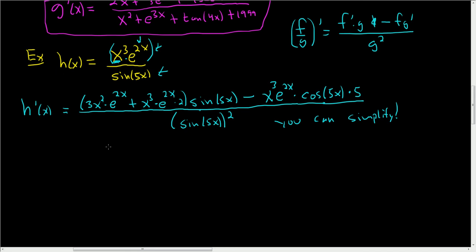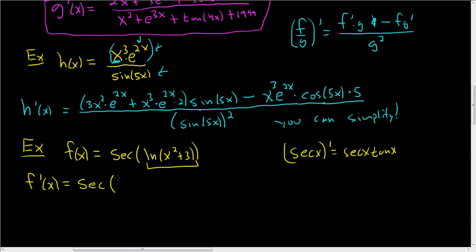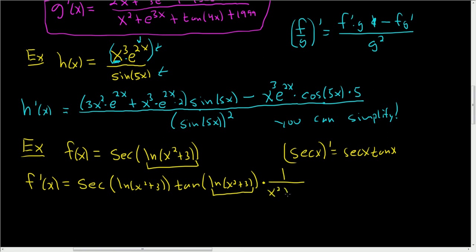Taking derivatives is the fun part — the simplification is where the grunt work comes in. Let's take another derivative. f of x equals the secant of the natural log of x squared plus 3. This is something that always causes confusion and is actually pretty tough. The derivative of secant is secant tangent. So here it's the secant of that stuff times the tangent of that stuff — you don't touch the inside. Then chain rule: multiply by the derivative of the inside. The derivative of ln x is 1 over x, so it's 1 over x squared plus 3, times the derivative of the inside again, which is 2x.